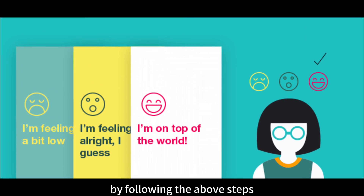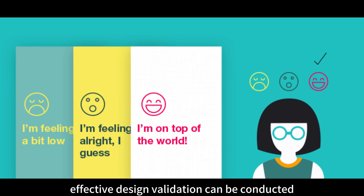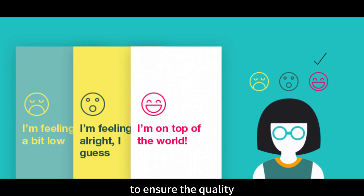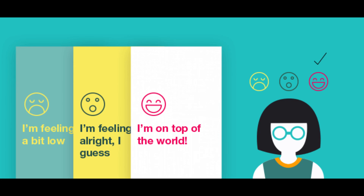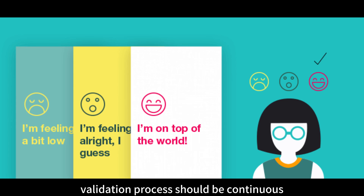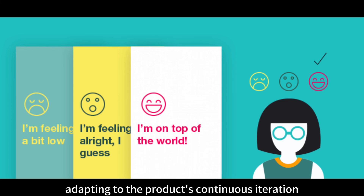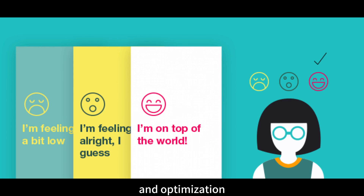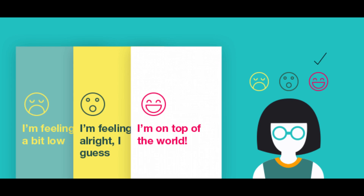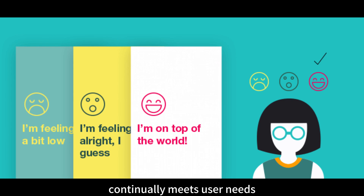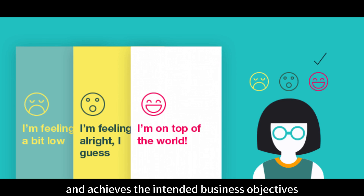By following the above steps, effective design validation can be conducted to ensure the quality and effectiveness of the design. The validation process should be continuous, adapting to the product's continuous iteration and optimization. This approach ensures that the product design continually meets user needs and achieves the intended business objectives.